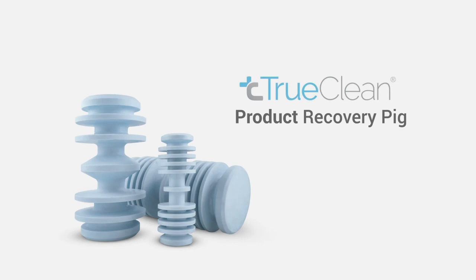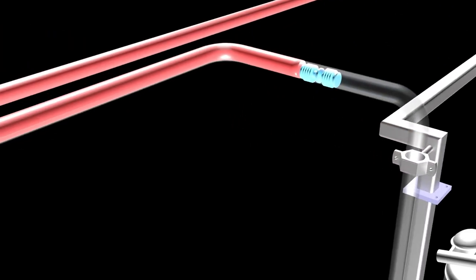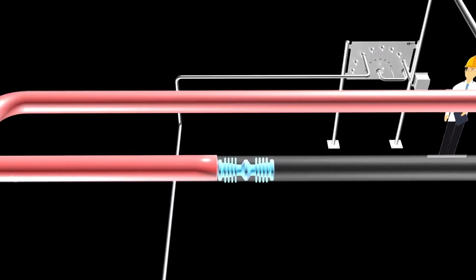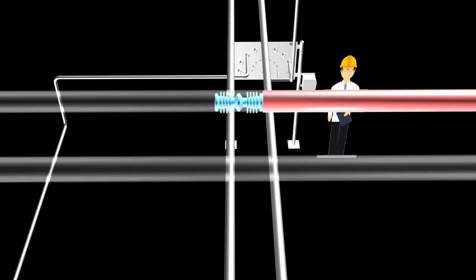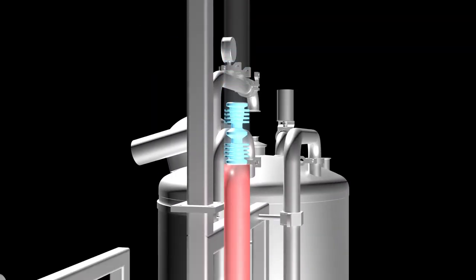That's where the TruClean Product Recovery Pig comes in. When utilized inside a product recovery system, the pig is launched at the start of the process line and moves towards the end. The pig acts as a squeegee and pushes the product remaining in the line into the tank.